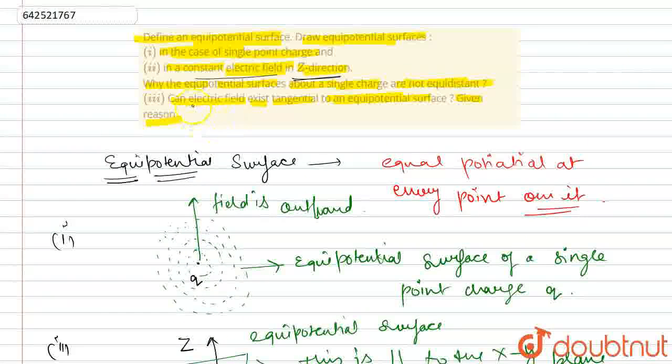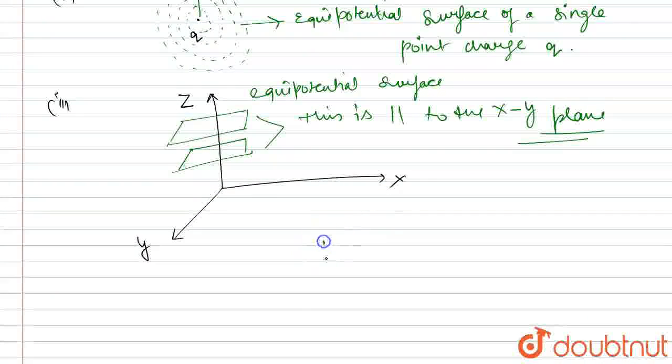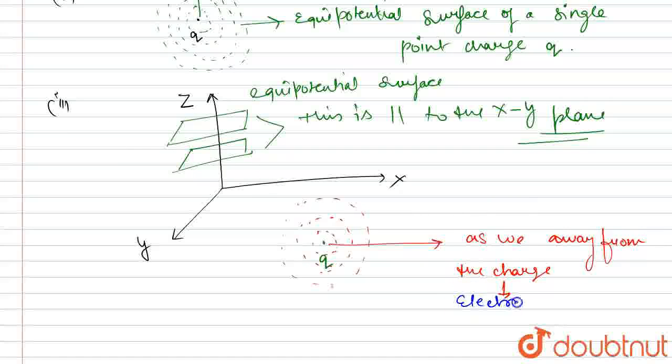Now, it asks that equipotential surface about a single charge, why it's not equidistance? For that, we know that if this is a point charge Q and this is the electric field. So, as we move away from the point charge, as we move away from the charge, the electric field E decreases.